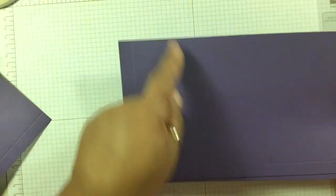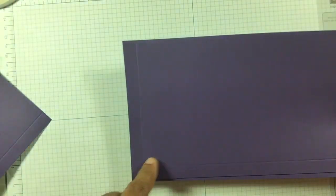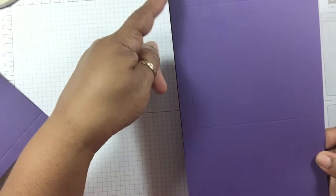So 9½ x 5½, score it at 1½ inch, 5 inches, turn sideways, score it at 1½ inch again for both of those.